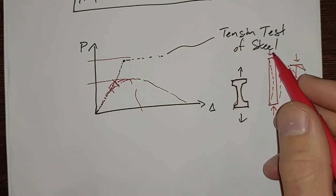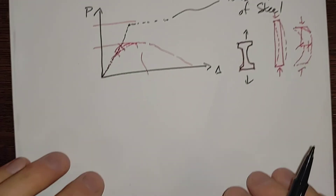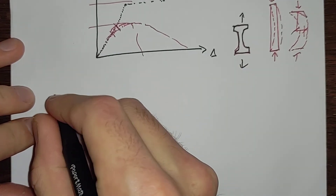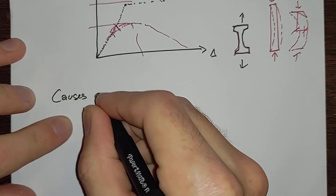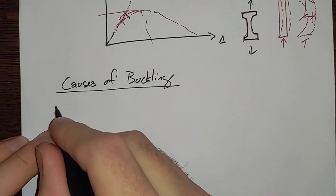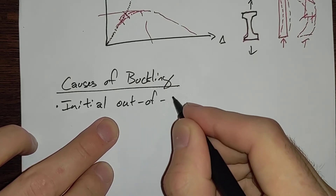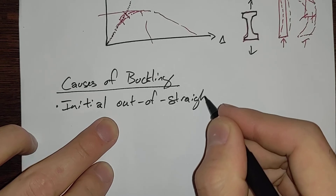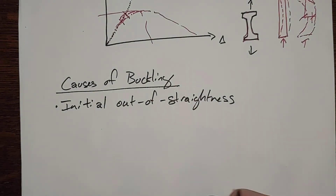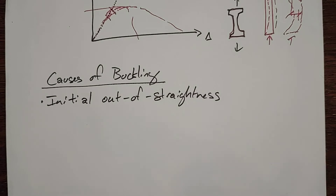Now you might be wondering: how is a perfectly applied concentric load on an ideal column going to cause us to buckle? So what causes buckling? First, we could have initial out of straightness. Your perfectly straight column isn't quite perfectly straight. There are tolerances in structural steel, in any physical material — nothing is perfectly straight. It might be straight enough, but there's always some initial out of straightness.